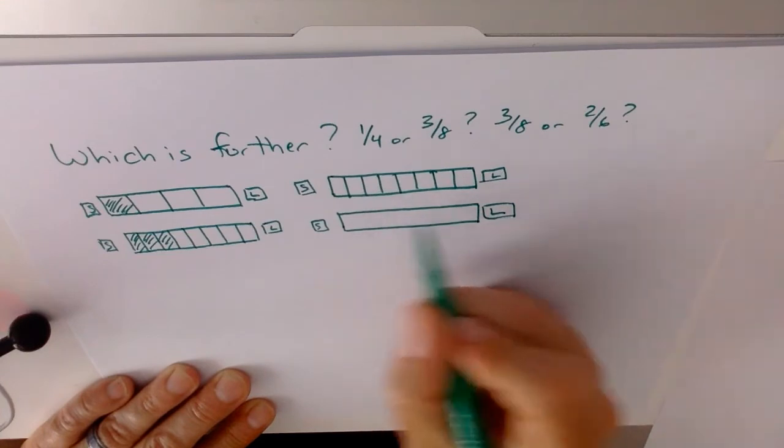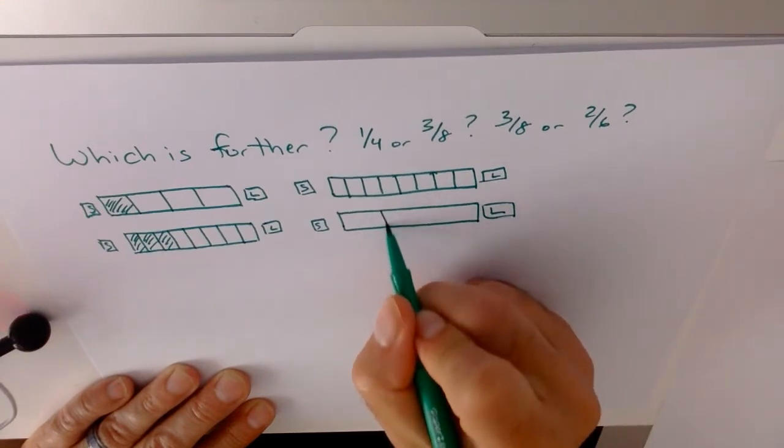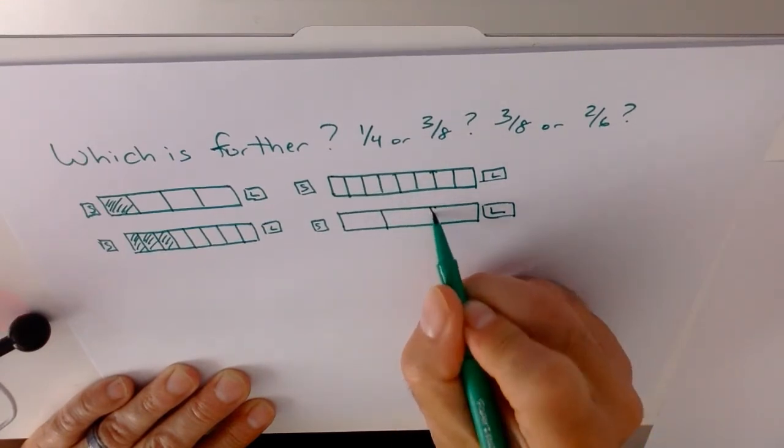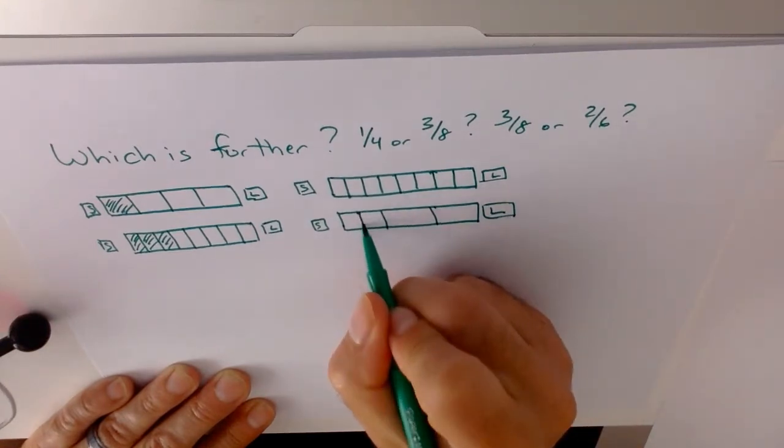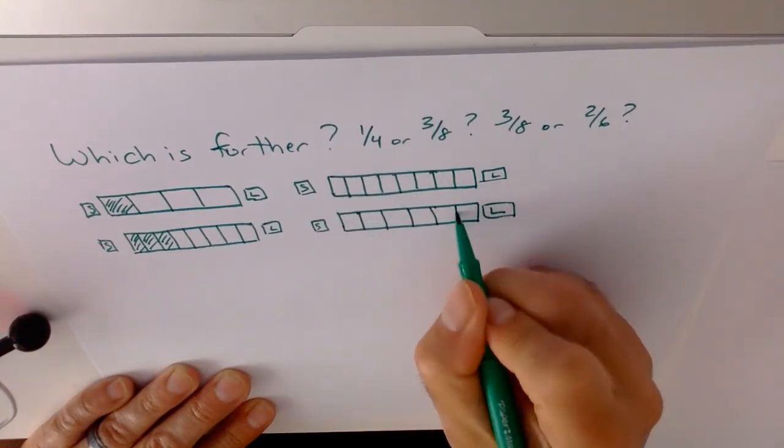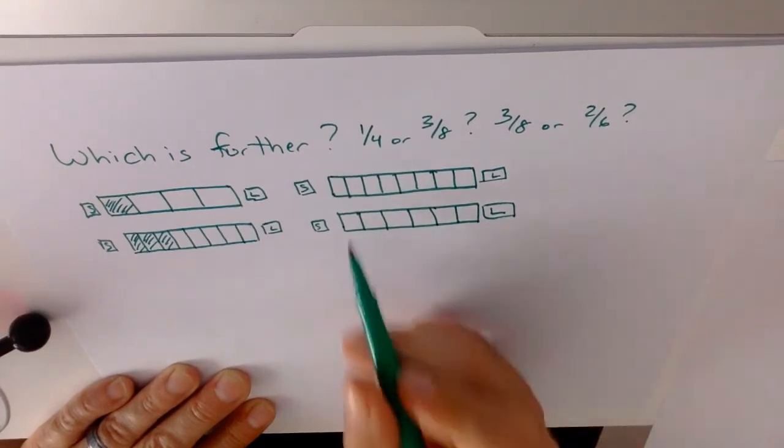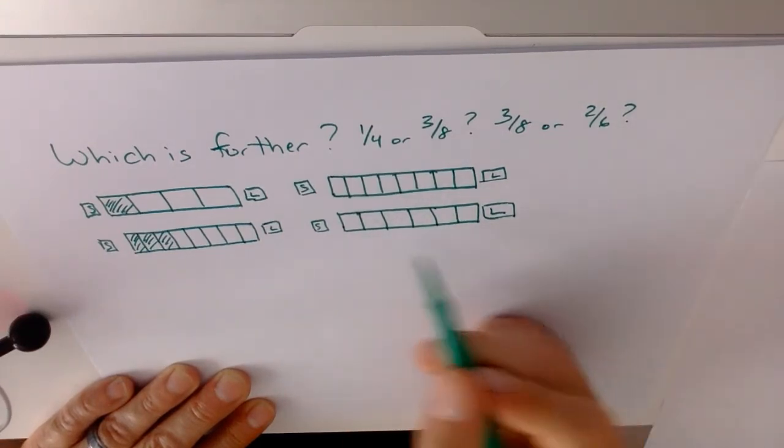And then for the sixths, we're going to actually do about a third, about a third, and this is a little bit tougher to approximate, but then we divide them again, and again, and again. So you get a lot better eighths and a lot better sixths if you do it that way.